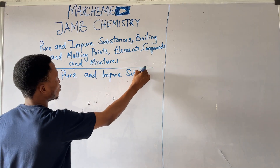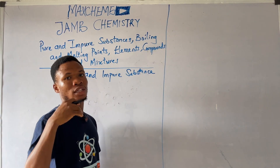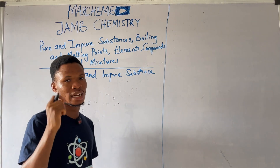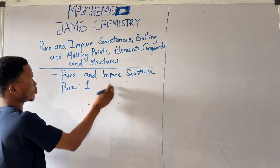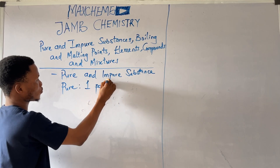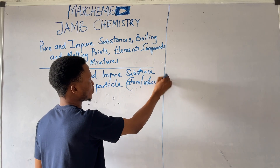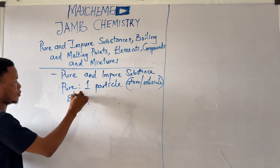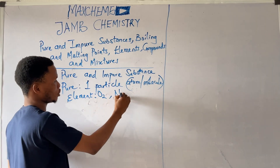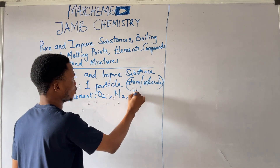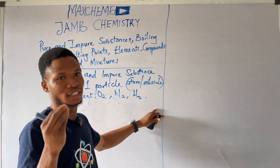So what are pure substances? Pure substances are substances that contain only one kind of particle. Pure substances have just one kind of particle in them. The particle can be an atom or molecule. For example, elements like oxygen, nitrogen, like hydrogen — these are pure substances because they contain only one particle in them.